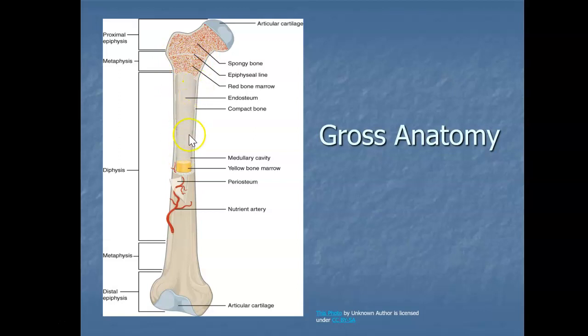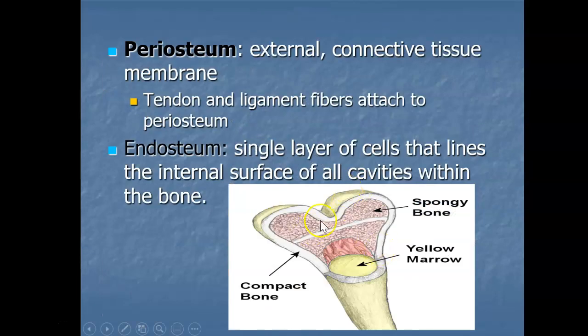The medullary cavity is lined with a membrane called the endosteum. This is where bone growth, repair, and remodeling occurs. Here's a picture showing the endosteum lining the inside of the bone.